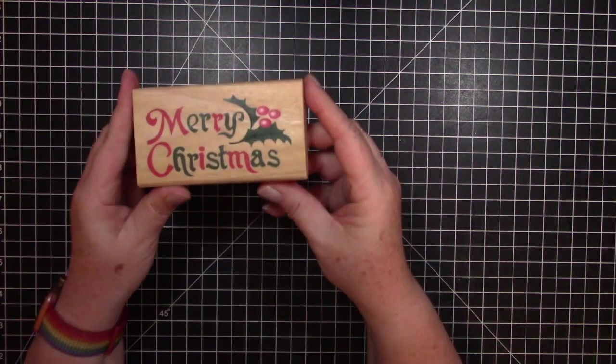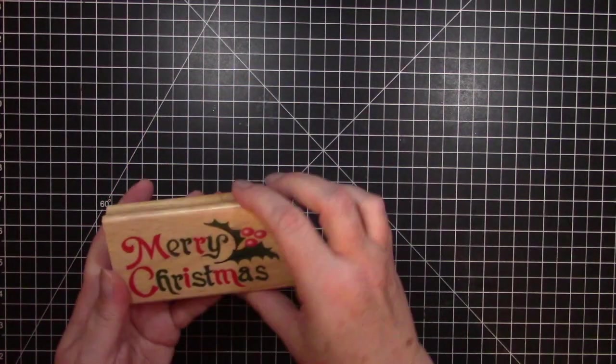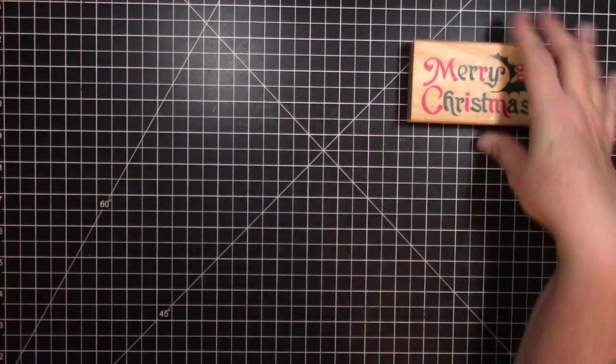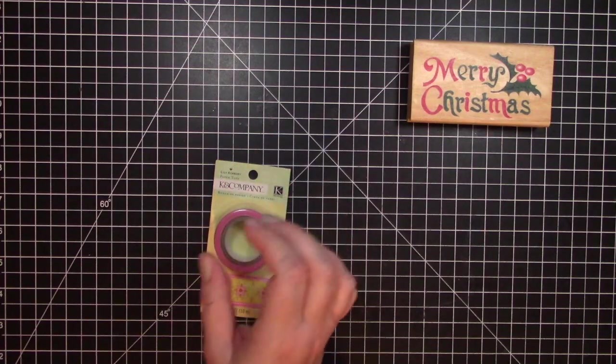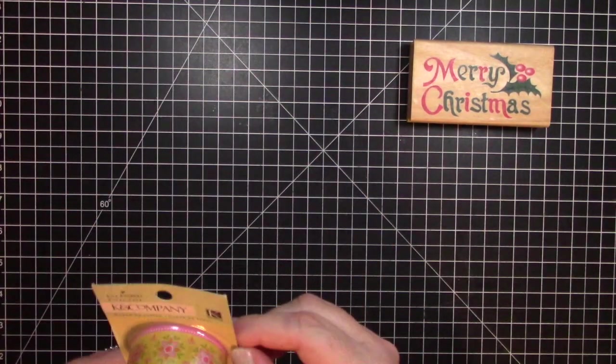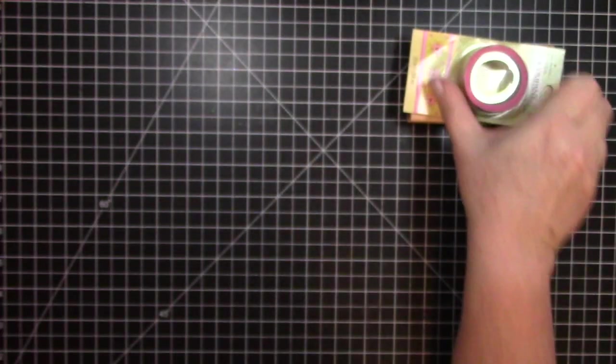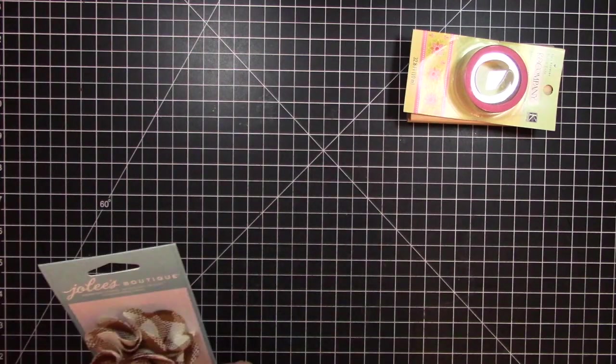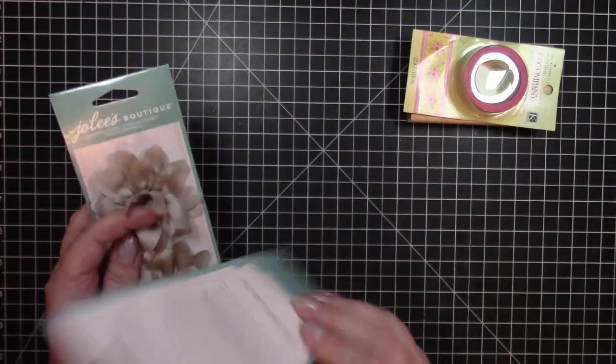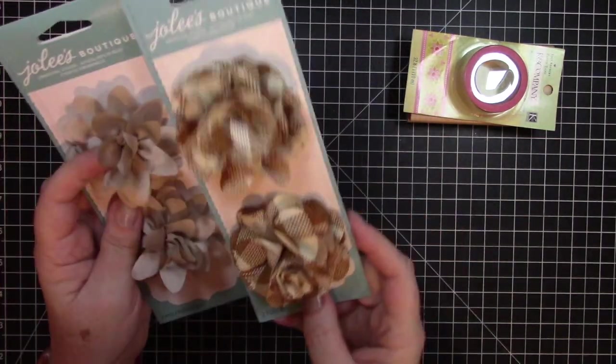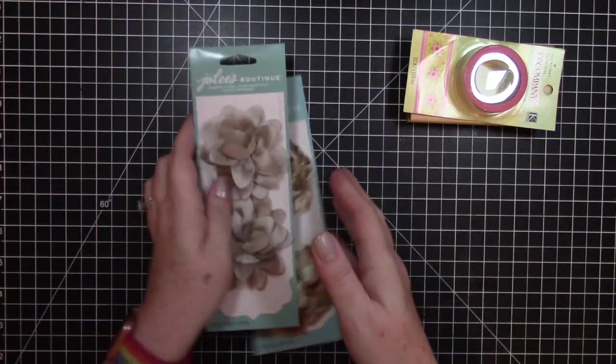The first thing in the box is this Merry Christmas wooden stamp. It doesn't have a maker but it looks like it's brand new. I'm just grabbing some of the loose small stuff up at the top of the box. Then we have this Kay and Company washi tape. That's quite pretty. We have a couple of these Jolie's Boutique flowers. They are pretty big, pretty thick. This one is like burlap and this one feels more like a silky material.